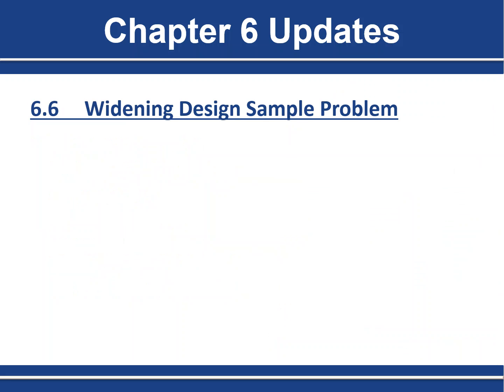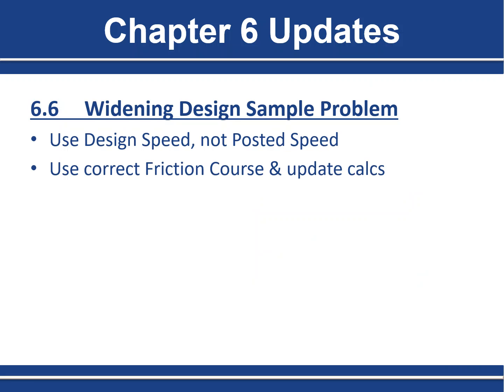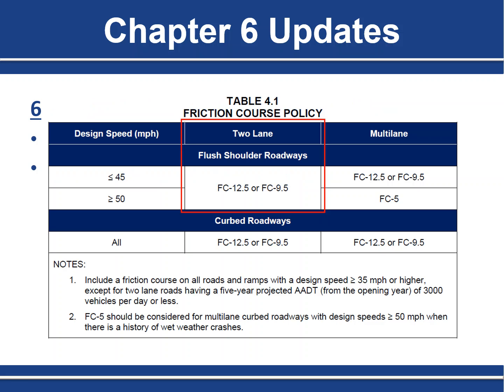The only changes to Chapter 6, the chapter on pavement widening, were to the sample problem in Section 6.6. The problem statement originally used posted speed rather than design speed, so we updated it to a design speed of 65. Also, the original problem specified FC 5 open graded friction course; however, per the friction course policy table in Chapter 4, we only place dense graded friction courses — FC 9.5 or 12.5 — on two-lane flush shoulder roadways. So we corrected the friction course type and updated the subsequent calculations accordingly.